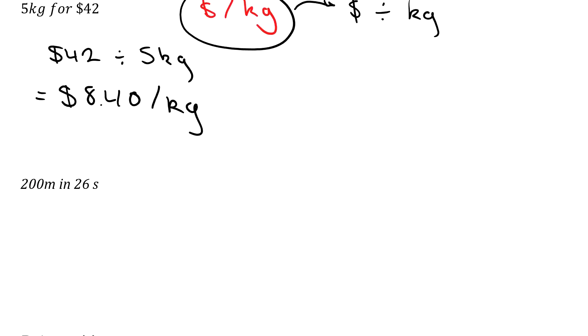So we'll do that again. Over here, this time we want it in meters per second. So again, what that is telling us is our meters divided by our seconds. So 200 meters divided by 26 seconds, and that gets us 7.7 meters per second if we round.